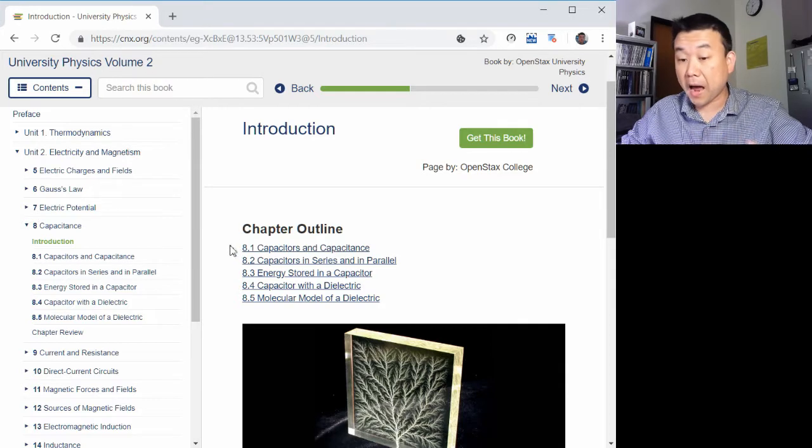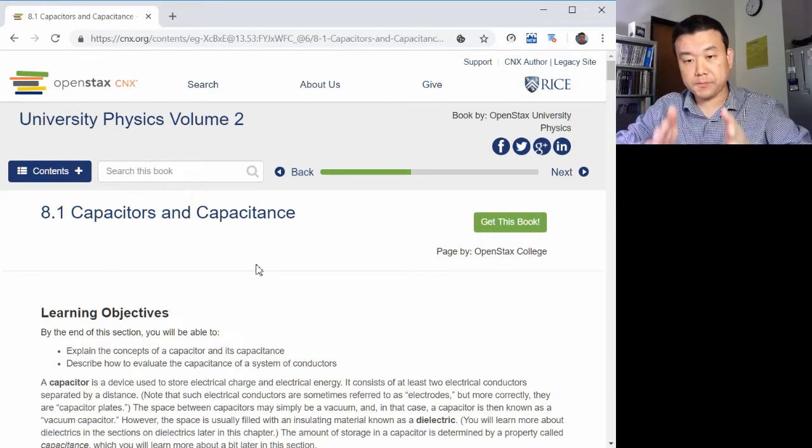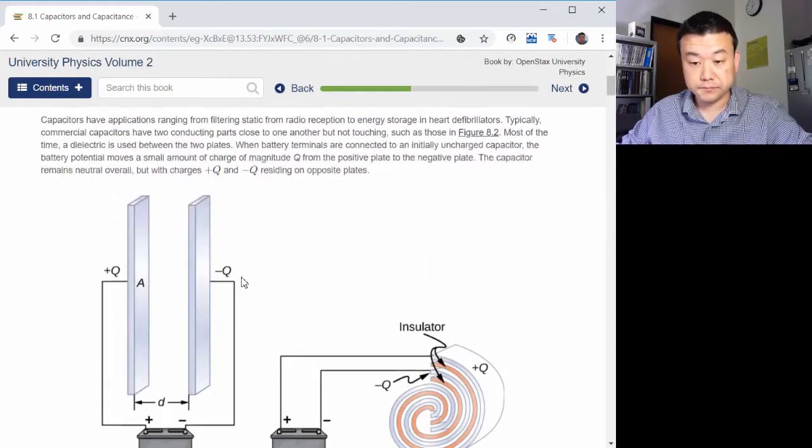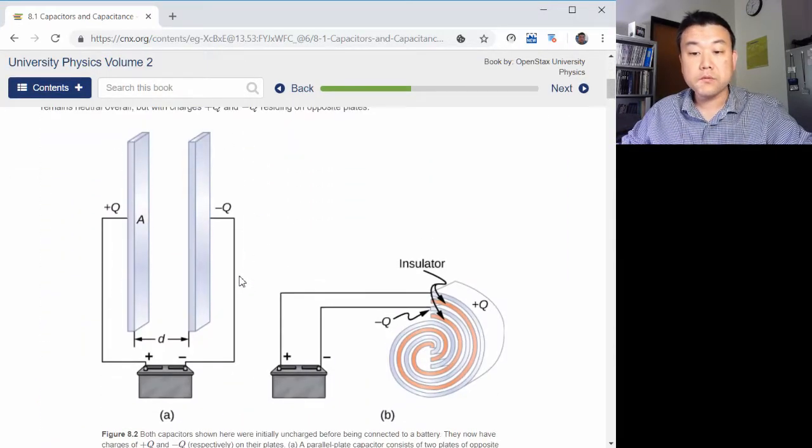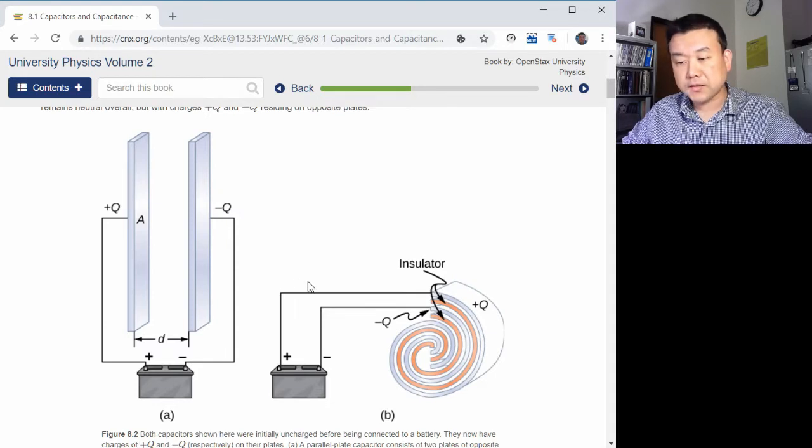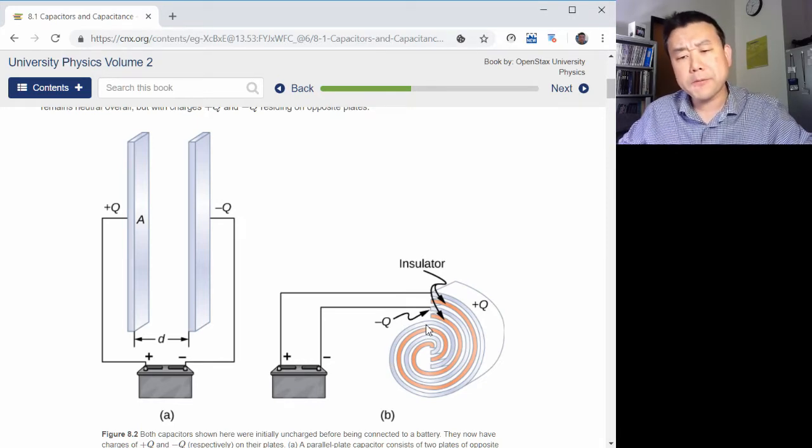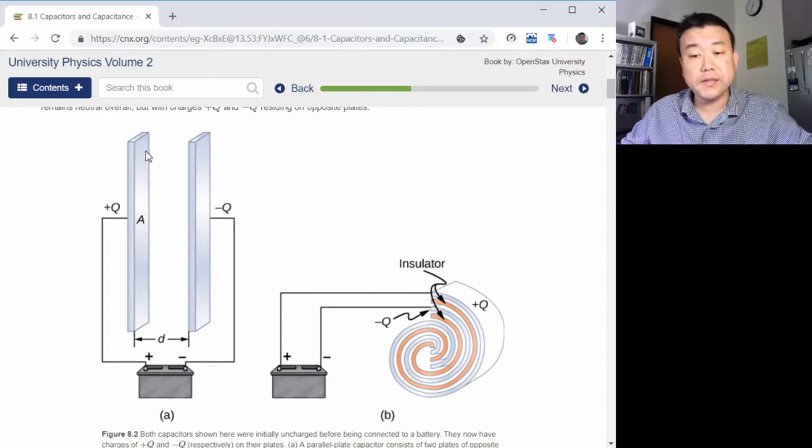So what a capacitor is, is basically two parallel plates of conductors that can be charged up with one positive and the other negative so that they are overall electrically neutral. The real-life capacitors are usually rolled up like this with an insulator between them, which we will call dielectric. But for our purposes, we are going to imagine we are dealing with these parallel plate capacitors.